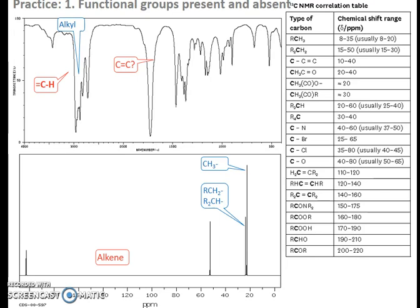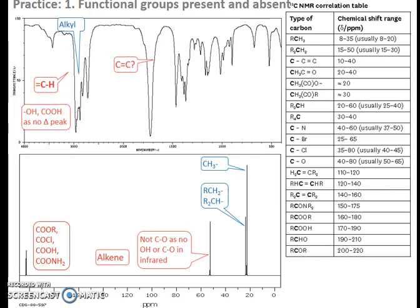The next thing we have, or we don't have, I should say, is we don't have carbon-carbon double bonds. Because there's no peak at about 1650, 1680 on the IR spectrum. And there's no peaks in that 100 to 150 range in the NMR.